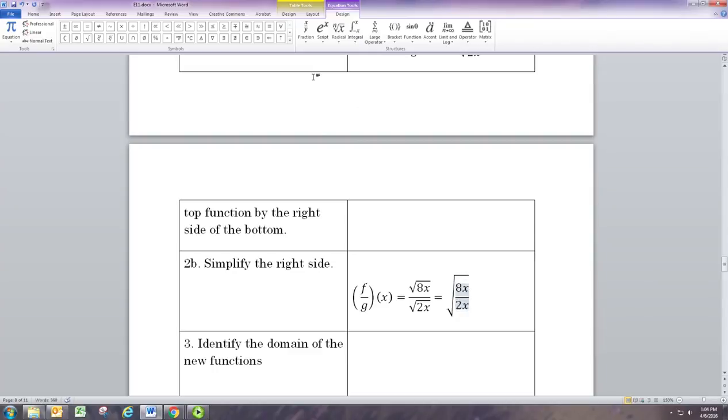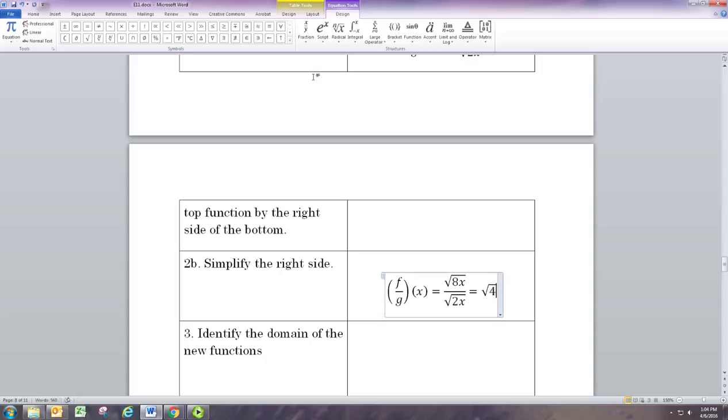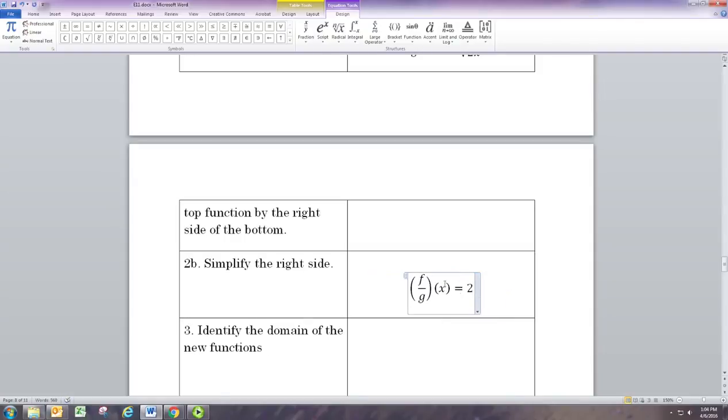So we'll just make the fraction be brought under one radical and put 8x on top and 2x on the bottom. Now looking at that fraction you can actually reduce the fraction. 8 over 2 is just 4 and x divided by x is just 1. So this is all just 4. And the square root of 4 is just 2. So in the end we just have that the function is the constant function 2.